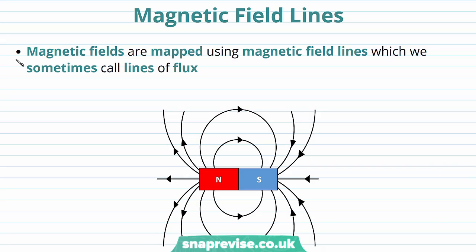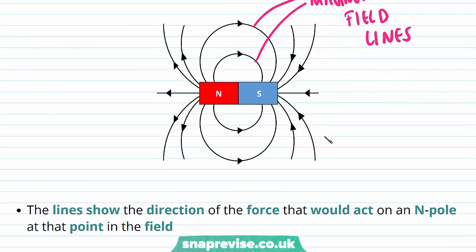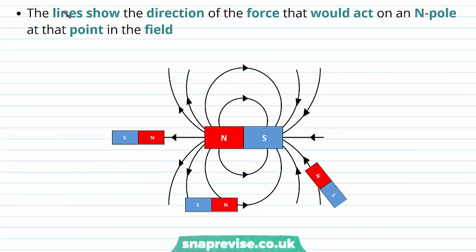We're going to define what magnetic field lines are. Magnetic fields are mapped using magnetic field lines, which we sometimes call lines of flux. You can see on this diagram of a bar magnet an example of magnetic field lines. These lines show the direction of the force that would act on a north pole at that point in the field. This is similar to electric field lines showing the direction of force on a positive charge. So here we have our north pole experiencing a force away from another north pole, so the field line is pointing in that direction.